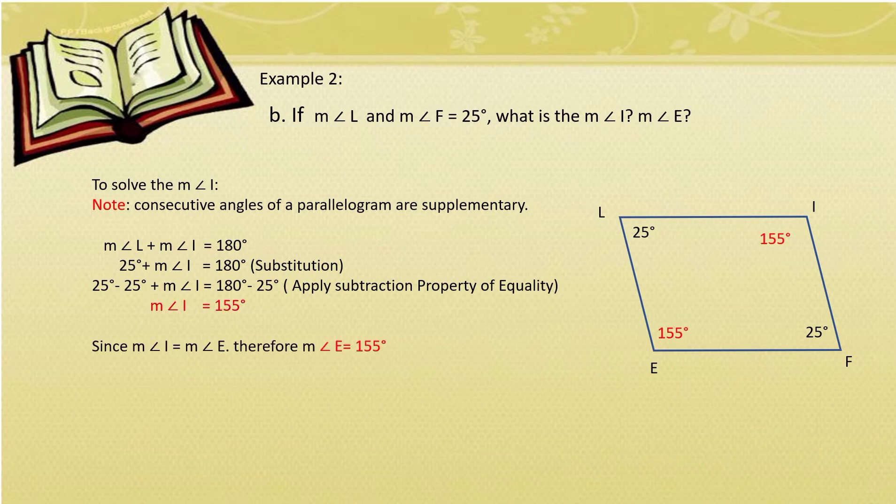Since angle I and angle E are opposite angles, they are equal. Therefore, the measure of angle E is also 155 degrees.